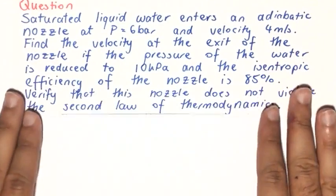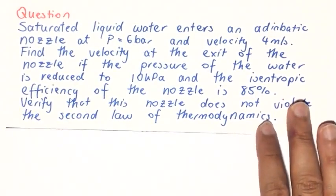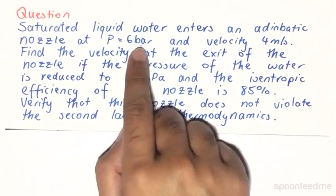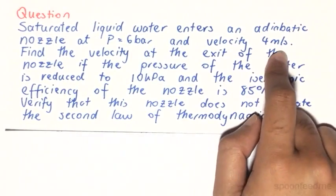So our question is as follows. Saturated liquid water enters an adiabatic nozzle at a pressure of 6 bar and a velocity of 4 meters per second.